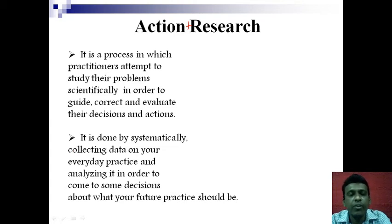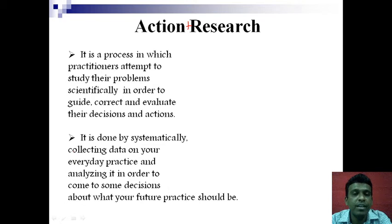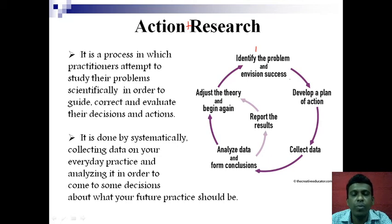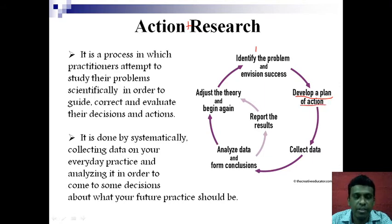There is a cycle in action research, similar to the PDCA cycle — Plan, Do, Check and Act — from production and operations management. The steps are: first, identify the problem and envision success — identify what the problem is and what the bottlenecks are. Then develop a plan of action. Next, collect data on how you are doing, maybe from consumers, respondents or students. Then analyze the data and form conclusions. Report the results to management or higher authority.